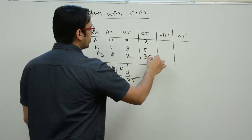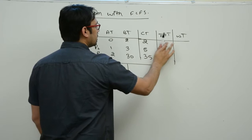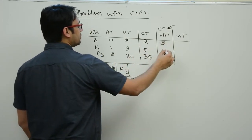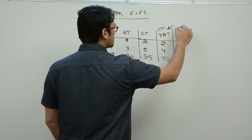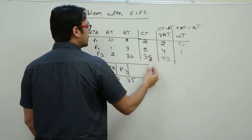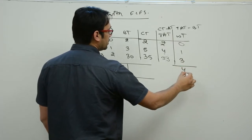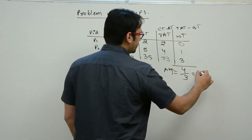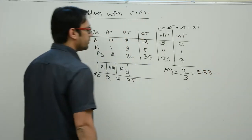Turnaround time is completion time minus arrival time: 2 minus 0 is 2, 5 minus 1 is 4, and 35 minus 2 is 33. Waiting time is turnaround time minus burst time: 2 minus 2 is 0, 4 minus 3 is 1, and 33 minus 30 is 3. Adding all waiting times gives 4, so average waiting time is 4 divided by 3, which is approximately 1.33.